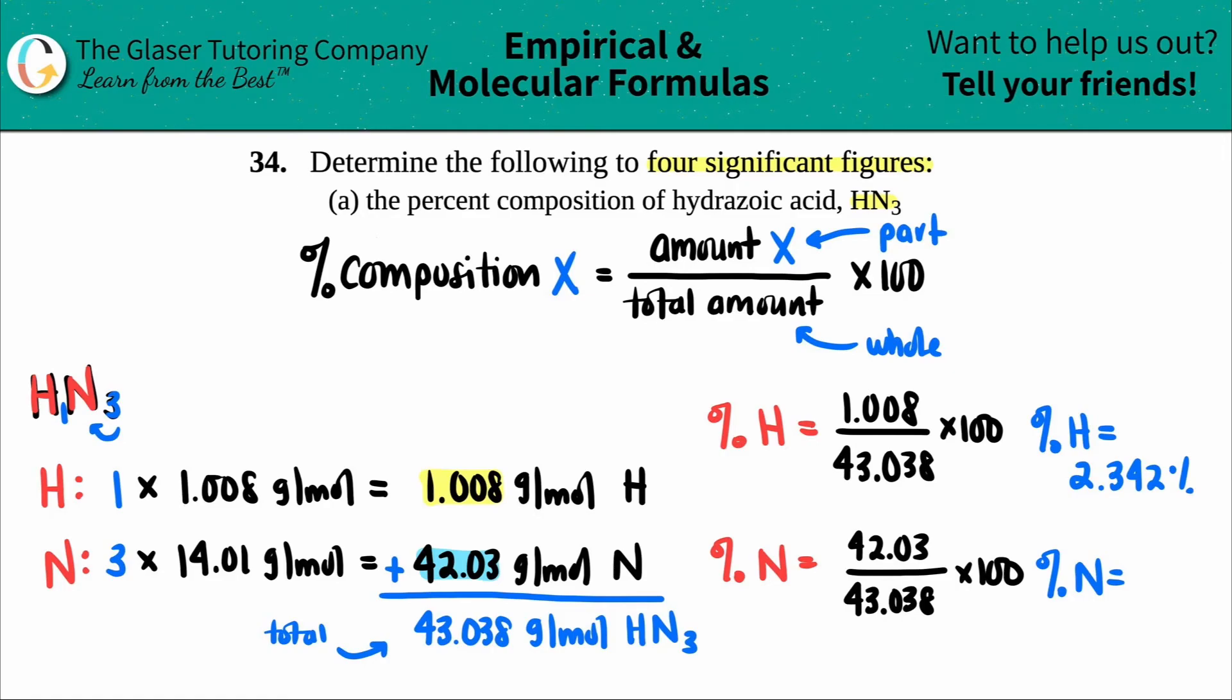Then for nitrogen, 42.03 divided by 43.038 times 100, four sig figs, 97. And maybe I will bring it down a little bit as well: 97.66.